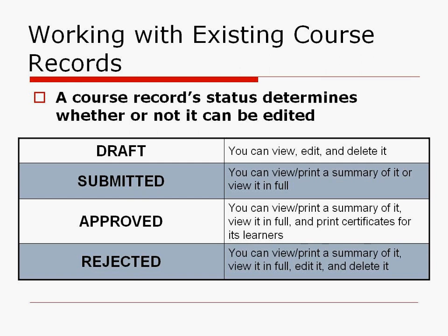Once you press Submit, the course record goes to the Red Cross and you can no longer edit or delete it. You can view and print it in summary or in full. Should you notice an error after clicking Submit, contact your local Red Cross immediately to have them reject it and send it back so you can make corrections. Once a course record is approved, you can view, print, and print certificates for learners. You'll receive an email notification when certificates are ready to print. It takes about one business day after submission for approval, and certificates cannot be printed until that time. For same-day approval, contact customer service Monday through Friday, 8:30 a.m. to 5 p.m.